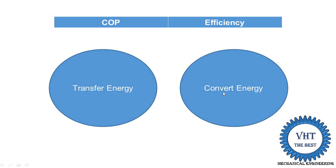In efficiency, we convert energy — for example, mechanical energy is converted into hydraulic energy, or into pressure energy. When we are transferring energy from the room to the surrounding or to the atmosphere, that is called the coefficient of performance. COP is generally used for refrigeration and air conditioning systems, while efficiency is used for other purposes.